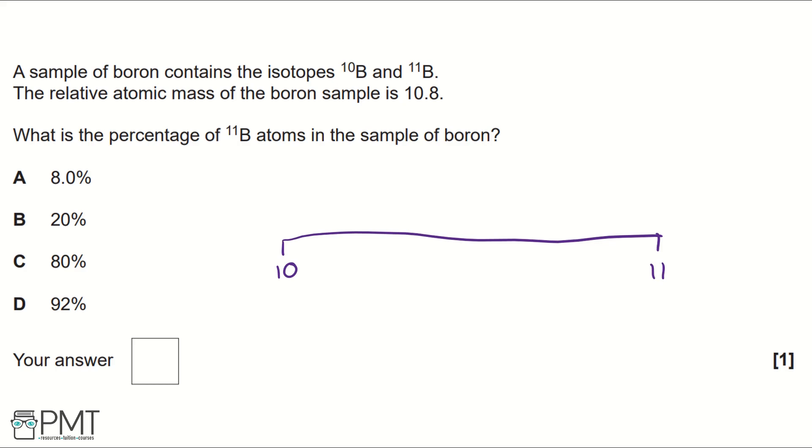The relative atomic mass of the boron sample is 10.8, so it's more towards the 11 on our number line. Therefore, it's going to have a higher percentage of 11B atoms in the boron sample.